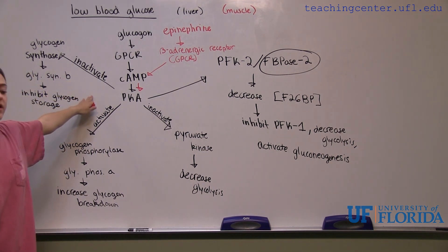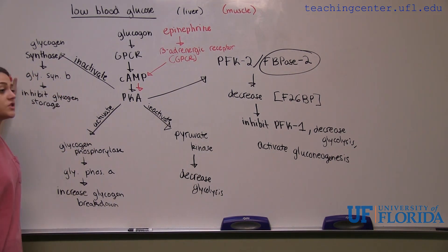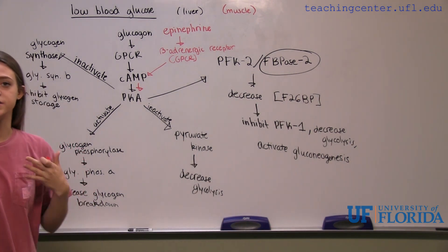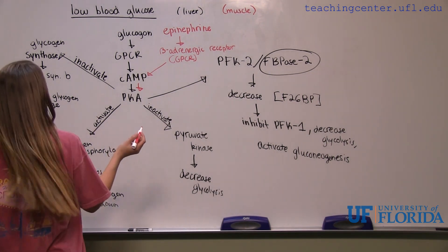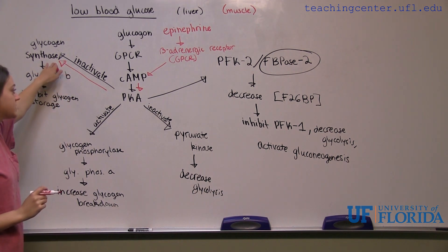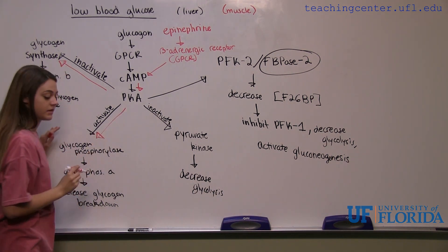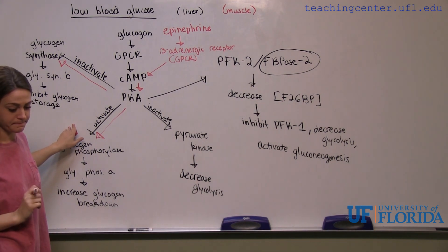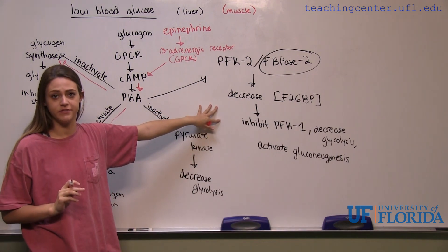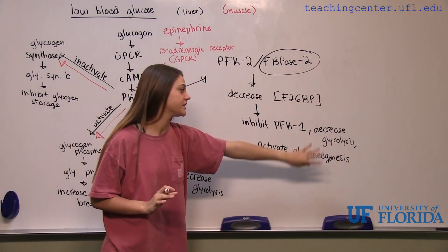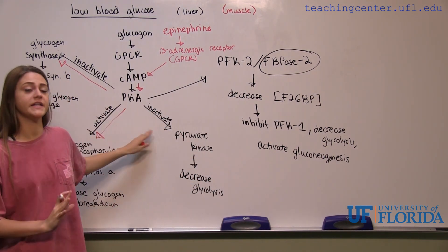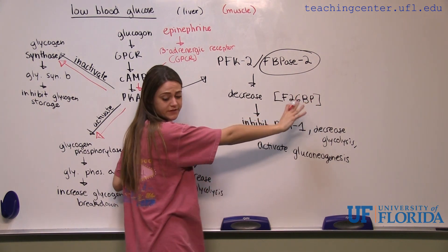The muscle cell is also going to have an effect on glycogen storage and breakdown, because muscles have glycogen stores in them in case you need a lot of energy for physical activity. So again, it's going to inactivate glycogen synthase and activate glycogen phosphorylase. The bifunctional enzyme we talked about is only in the liver, so the muscle cell is going to have nothing to do with it. The muscle cell also doesn't have an effect on pyruvate kinase — those are both just for the liver cell.